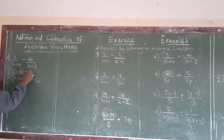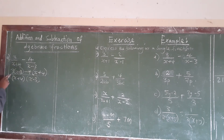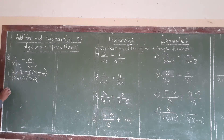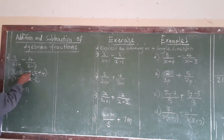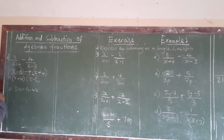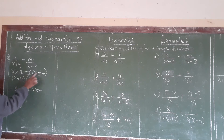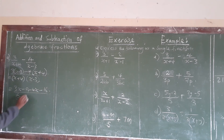The next step is to distribute the 3 throughout the bracket, and distribute the negative 4 throughout its bracket. So we say 3 times x gives 3x, and 3 times negative 3 gives negative 9. Then negative 4 times x gives negative 4x, and negative 4 times positive 4 gives negative 16. We can still maintain our denominator x plus 4 and x minus 3.